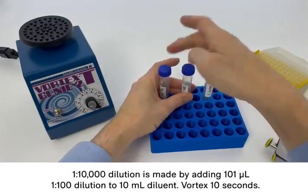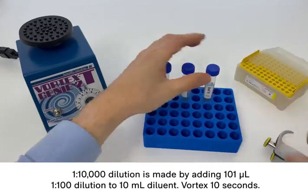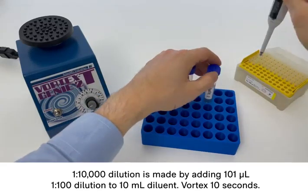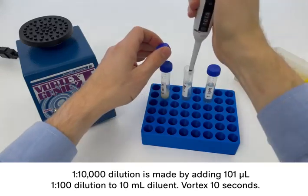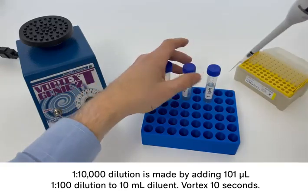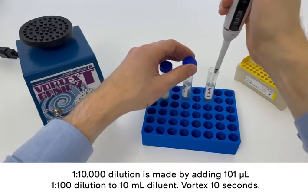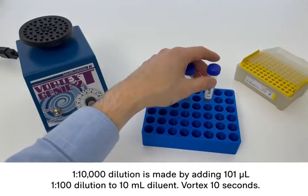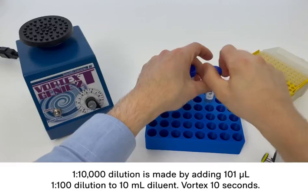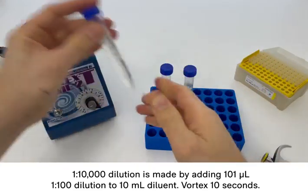As I showed you on the previous illustration, the 1 to 10,000 dilution is made by doing a 1 to 100 dilution of the 1 to 100 sample. And now I vortex again, this time for 10 seconds.